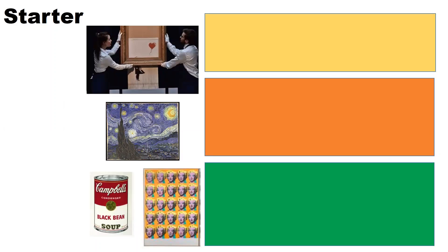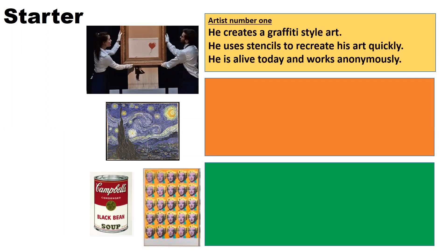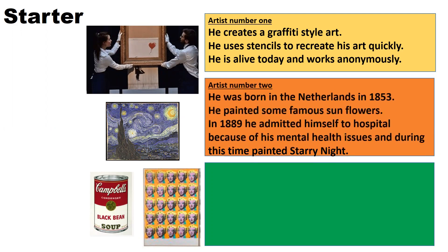Artist number one: he creates graffiti style art, he uses stencils to recreate his art quickly, he's alive today and works anonymously. Artist number two: he was born in the Netherlands in 1853, he painted some famous sunflowers. In 1889 he admitted himself to hospital because of his mental health issues, and during this time painted Starry Night.